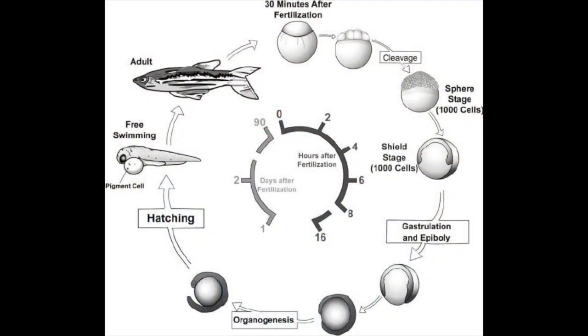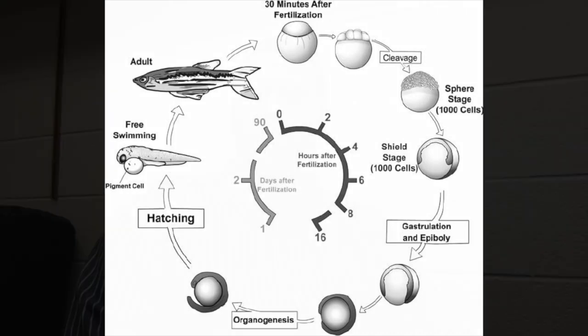Zebrafish are used as a model organism for modeling certain human diseases. They're really great because they develop very quickly and we can get a lot of research done relatively quickly when it comes to embryo development. They are also very similar to humans genetically — 75% of human genes have homologues in the zebrafish.